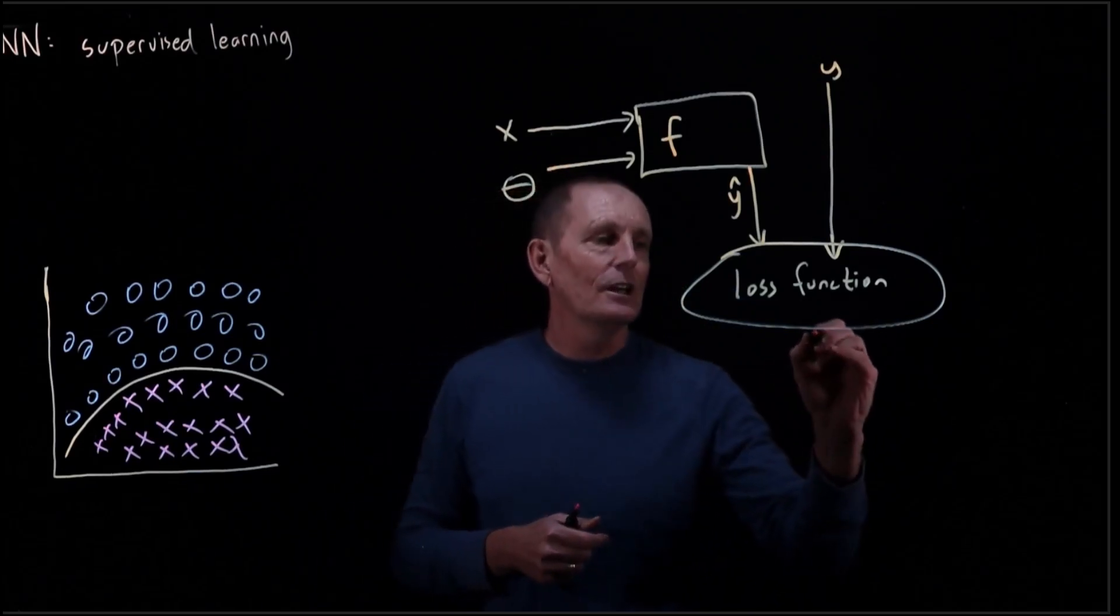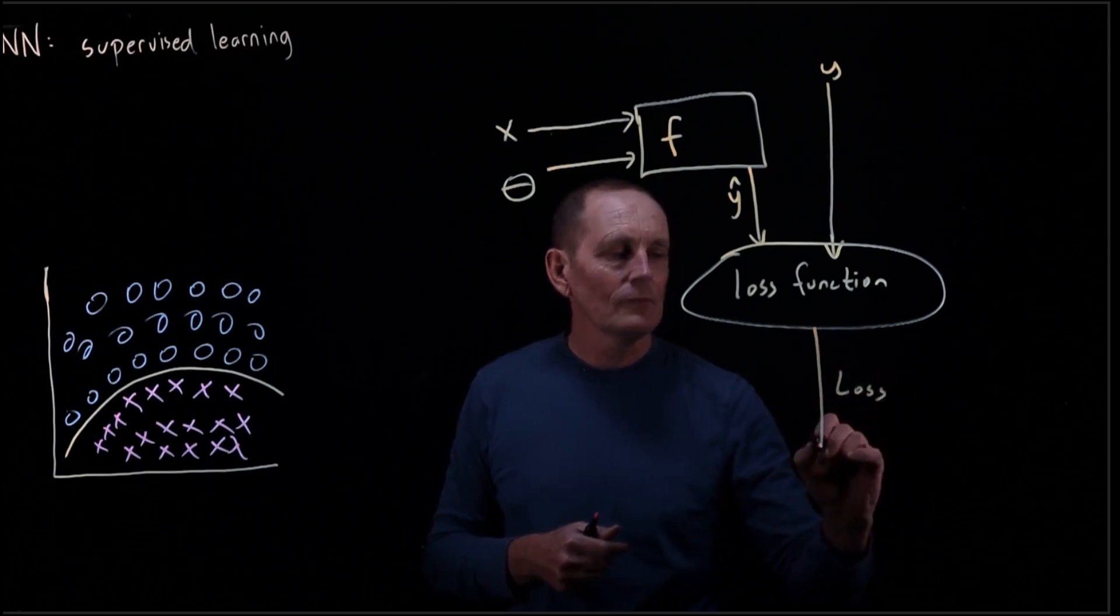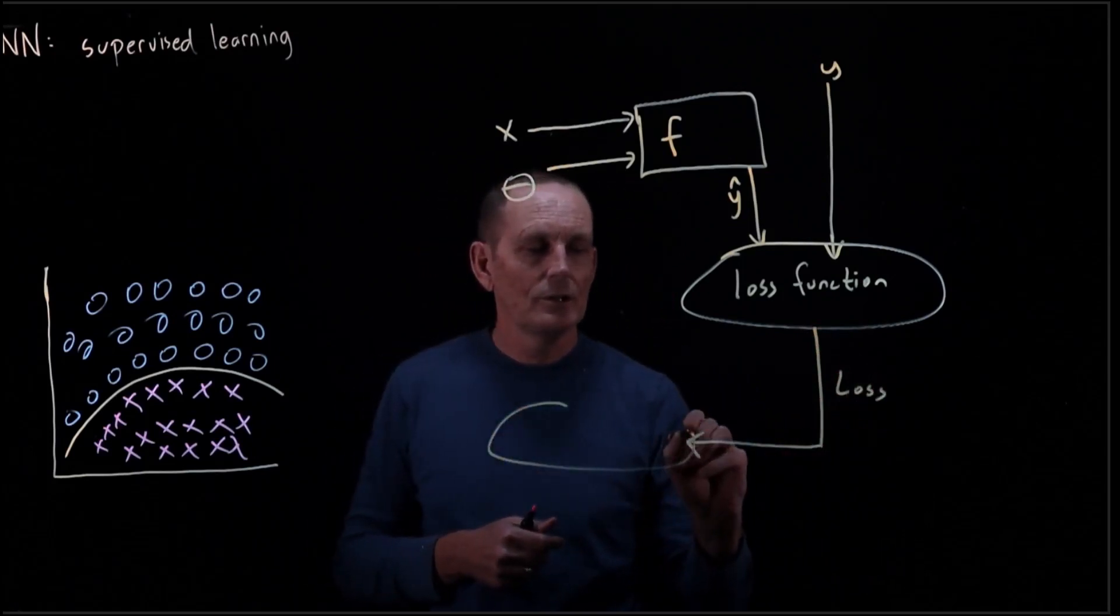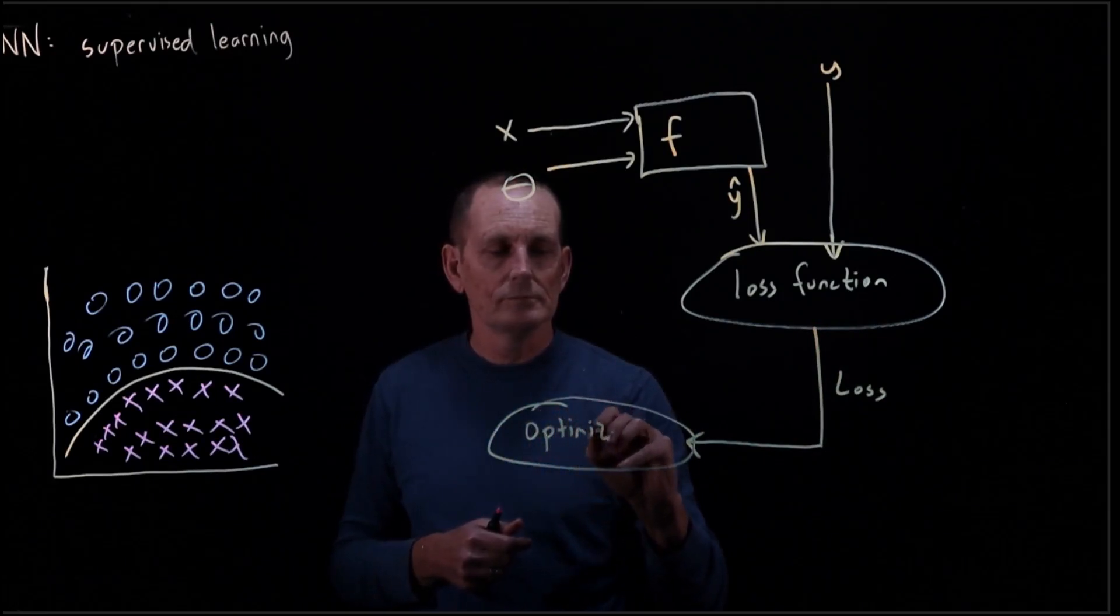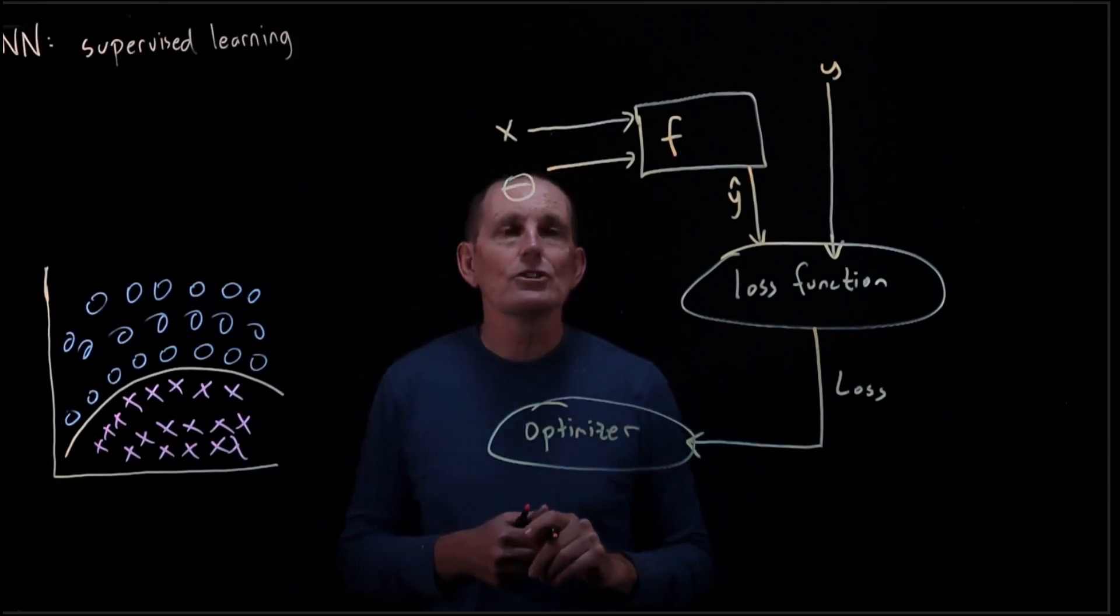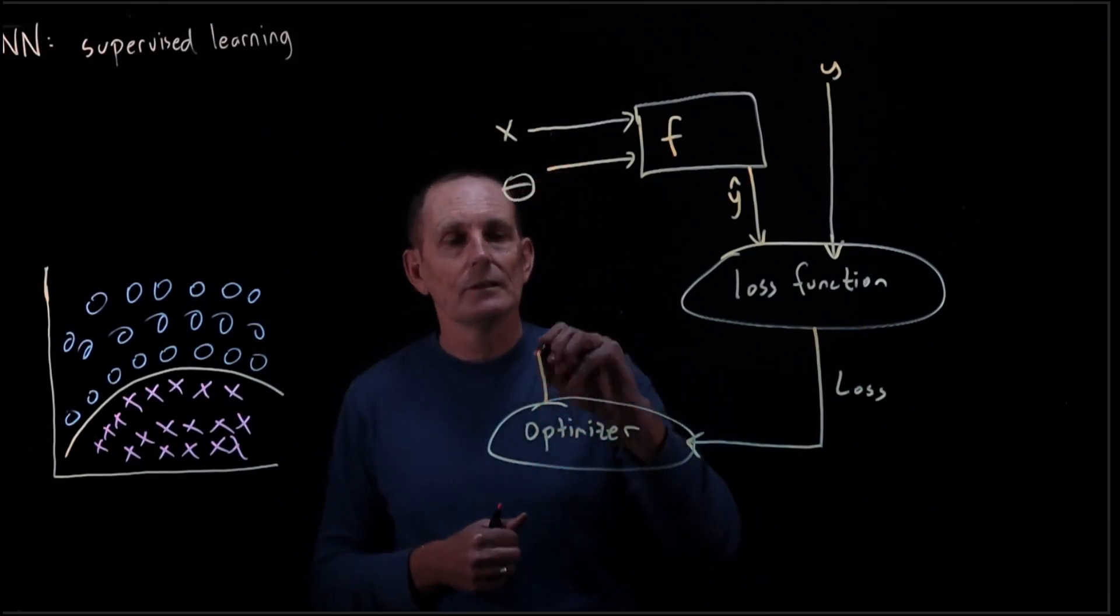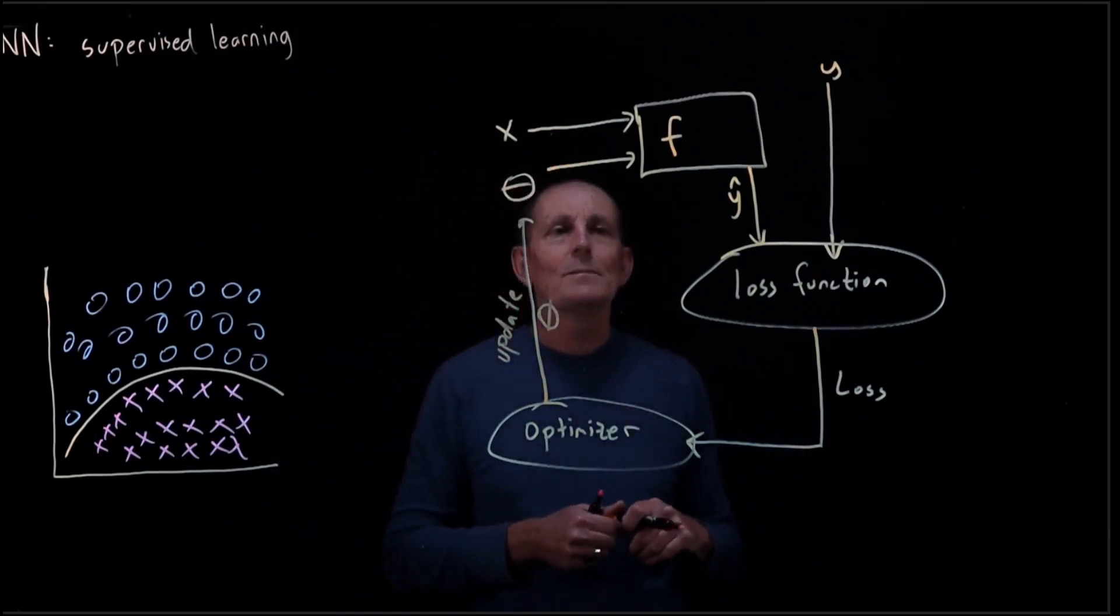And then what we do is we take this loss function and we say, okay, out of here we have a loss. We are going to feed this into an optimizer. And the optimizer's job is going to be to update theta. So it updates theta to make theta better.